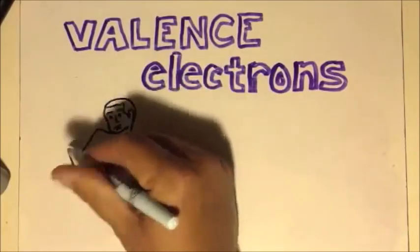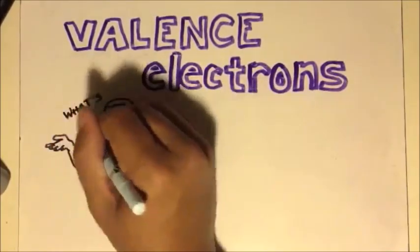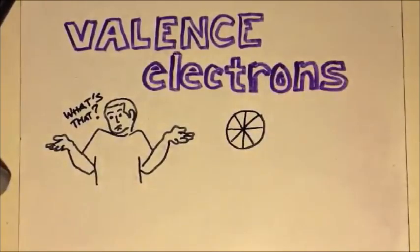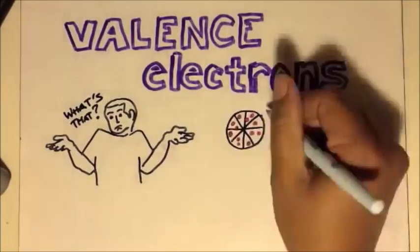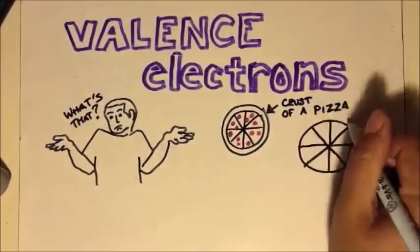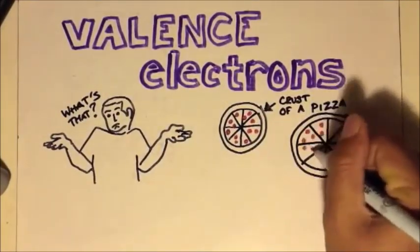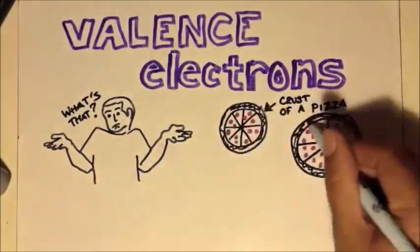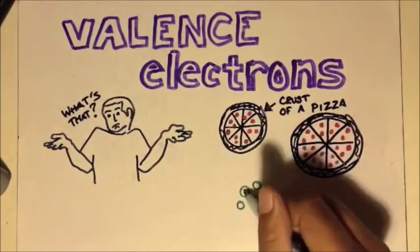Now, I'm sure you're kind of wondering, what's that? Well, if we compare valence electrons to, let's say, a pizza, there's pepperonis, but then there's also the crust. No matter how big or small the pizza is, the crust is always on the outside. That's the same thing we're talking about with valence electrons.